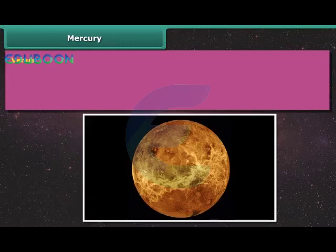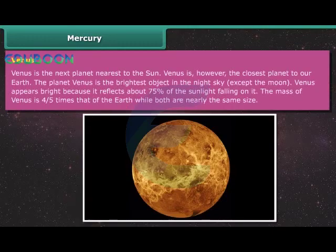Venus. Venus is the next planet nearest to the Sun. Venus is however the closest planet to the Earth. The planet Venus is the brightest object in the night sky except the Moon. Venus appears bright because it reflects about 75% of the Sun light falling on it. The mass of Venus is 4/5 times that of the Earth while both are nearly the same size.